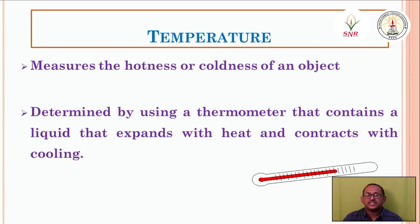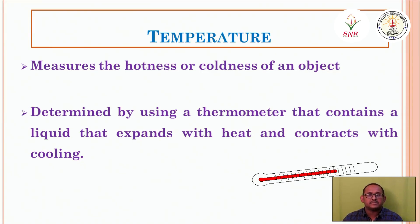Temperature is the measurement of the hotness or coldness of an object — these two parameters define it. We use thermometers to measure temperature. A mercury thermometer works on the expansion principle: when temperature increases, the liquid mercury expands and rises in the scale. The scale markings on the thermometer show how much the temperature has risen.